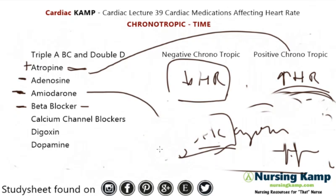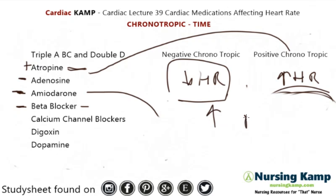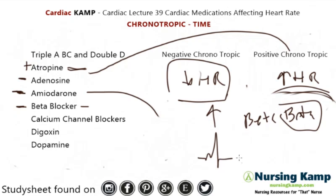Beta blockers are also negative chronotropic. Beta agonists increase the heart rate, so a beta blocker will slow it down. Please see my lecture on beta blockers — that's why we monitor heart rate and blood pressure prior to giving them. Beta receptors are responsible for beating the heart and increasing contraction, so if we want things to slow down, especially with an MI, we give beta blockers.